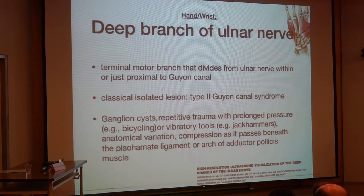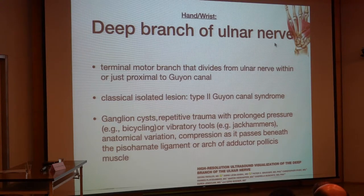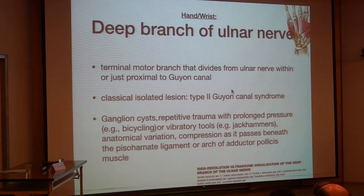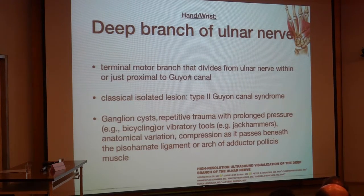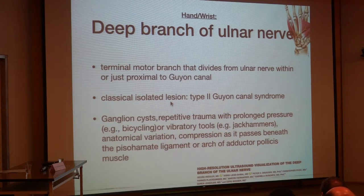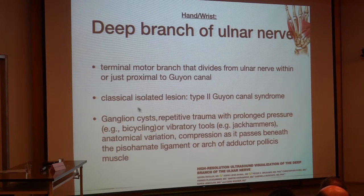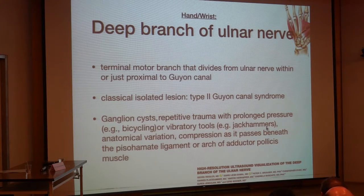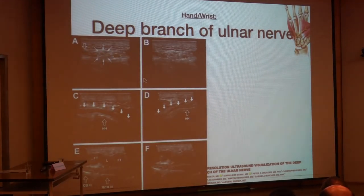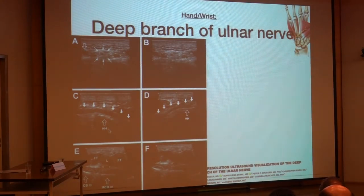There has recently been some nice work on the deep branch of the ulnar nerve, which divides just proximal to the Guyon's Canal or within it. There may be a classic isolated lesion like the type 2 Guyon's Canal syndrome entrapment, which can be due to ganglia or trauma from bicycling or vibratory tools like jackhammers. There are also several anatomical variations, and these nerves can be nicely differentiated on imaging.